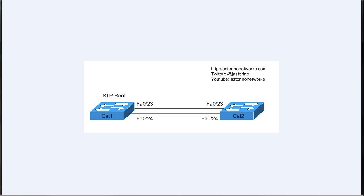Welcome back everybody. This is Joe Astorino, CCIE number 24347, and in tonight's video we're going to be taking a look at the port priority characteristic of the spanning tree protocol. We're going to look at exactly what the port priority feature does, and I'm going to show you how to manipulate it to change the way that your spanning tree is going to converge in a looped layer 2 network. This is applicable anywhere from CCNA all the way up to the CCIE.